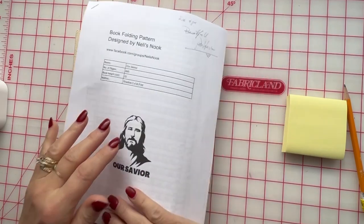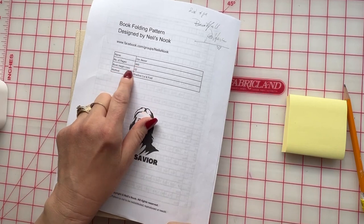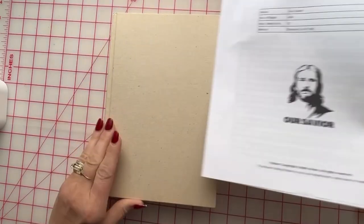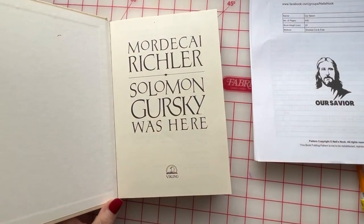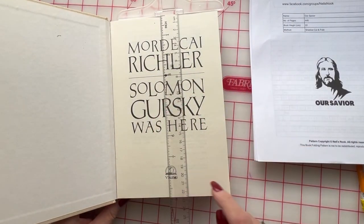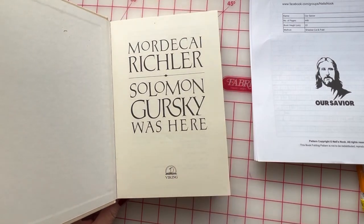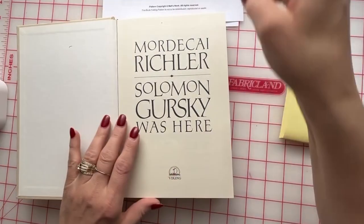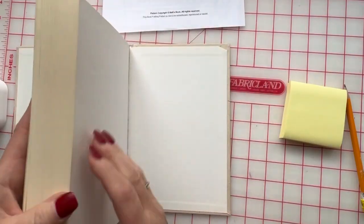My pattern is asking for 449 pages and I need a book height minimum of 22 centimeters. So my book is 22 and a half which is wonderful, that's more than enough for my pattern. And now we will be calculating how many pages in total do I have in my book.